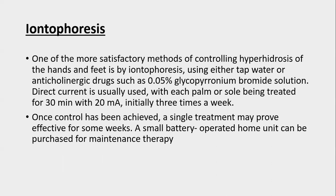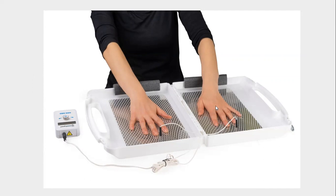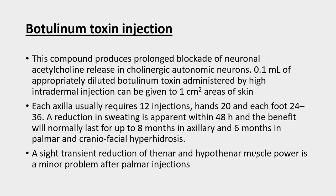Iontophoresis is one of the most satisfactory methods of controlling hyperhidrosis of the hands and feet. It uses tap water or anticholinergic drugs like 0.05% glycopyrronium bromide solution, with direct current applied to each palm and sole for 30 minutes at 20 milliamperes, three times a week. Once control is achieved, a single treatment may prove effective for some weeks. A small battery-operated home unit can be purchased for maintenance therapy.